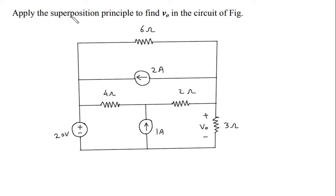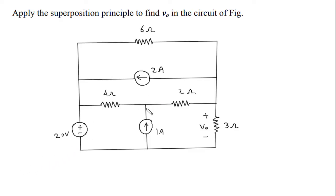Apply the superposition principle to find Vo in the circuit. We have to find Vo in this circuit using the superposition principle. As we can see, there are 1, 2, and 3 independent sources.